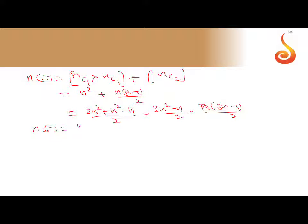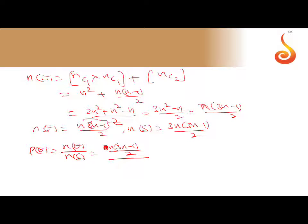n of E equals n into 3n minus 1 by 2. n of S equals 3n into 3n minus 1 by 2. Probability of E will be n of E by n of S: n into 3n minus 1 by 2 divided by 3n into 3n minus 1 by 2. This cancels, 2 cancels, 3n minus 1 cancels. Left is 1 by 3. The required probability is 1 by 3.